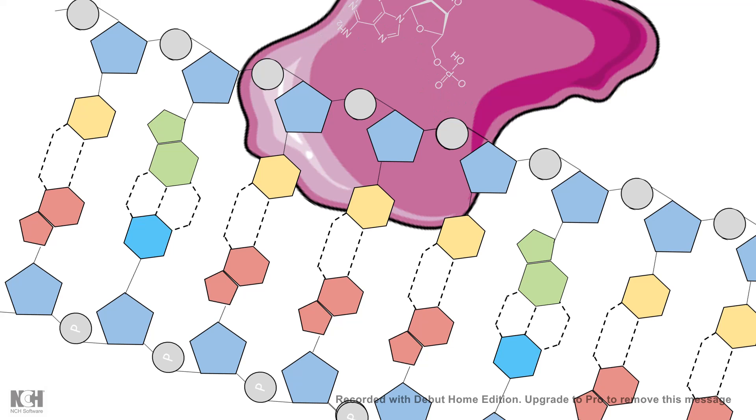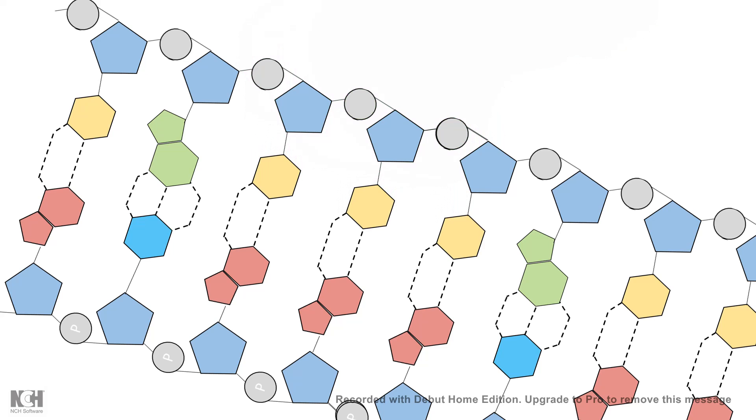When DNA ligase forms a phosphodiester bond, it gets disengaged from the DNA strand, and the DNA strand is finally ligated with the phosphodiester bond.